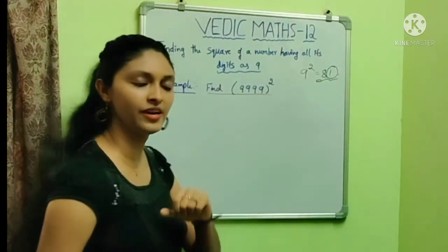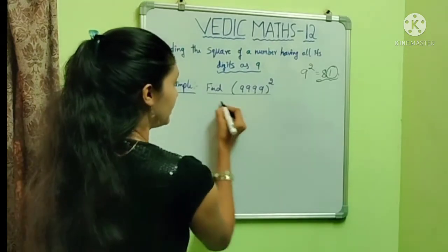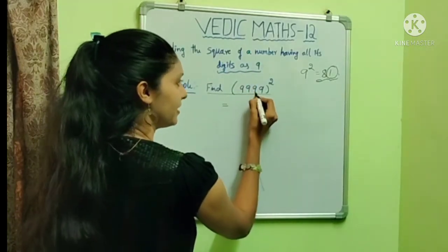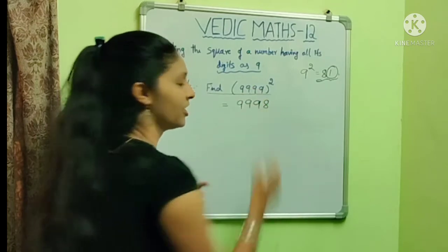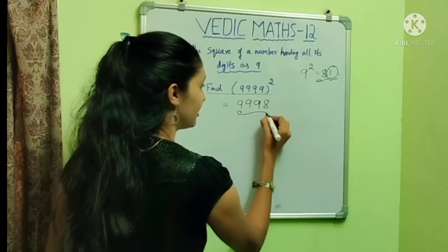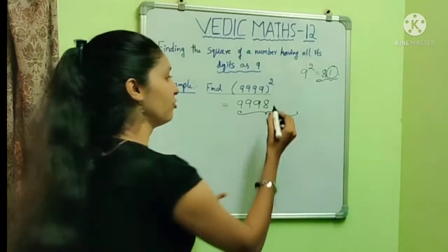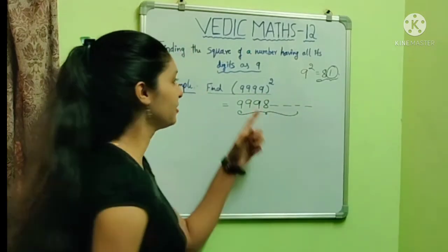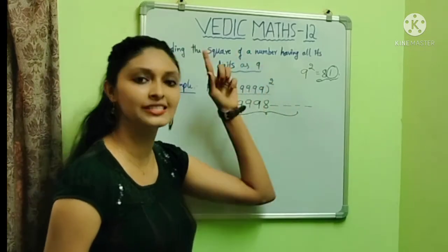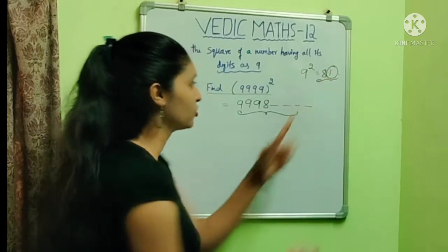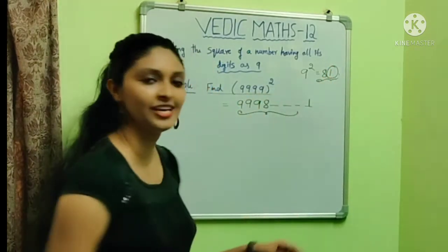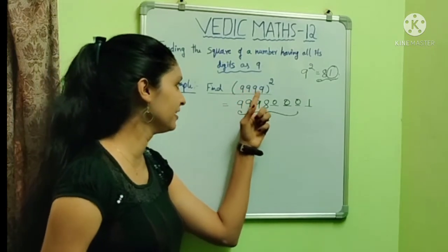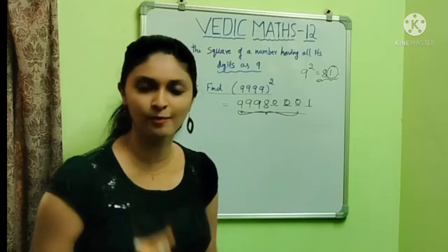To find 9999 whole square, what we have to do is make 1 less than the given number — 1 less than 9999 is 9998. Then for the completion of the final answer, we keep 4 vacant places for filling. Since the square of a number consisting of all 9s always ends with 1, the fourth place is filled with 1, and all remaining digits are filled with 0s. So the final answer for 9999² is 99980001, obtained without a calculator.